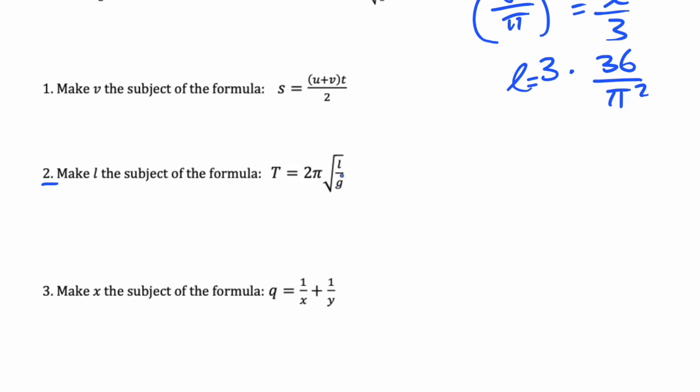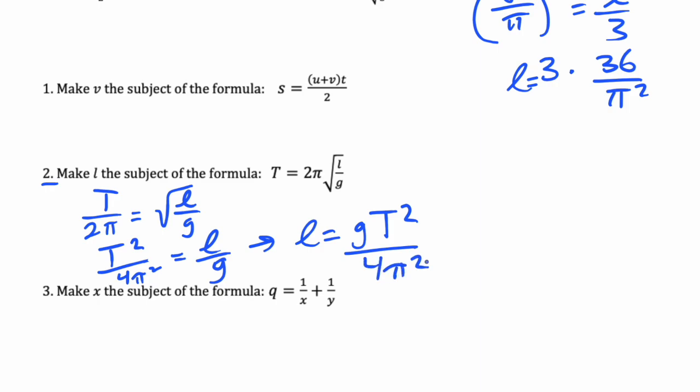Same procedure, we're going to solve for L here doing the exact same steps. So that's going to be T over 2π squared equals √(L/G), and then we square both sides, or you could have squared both sides from the beginning, same thing. And then one more step we multiply by G so we get L equals GT² over 4π².